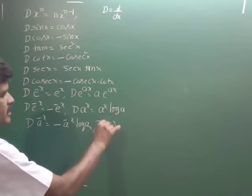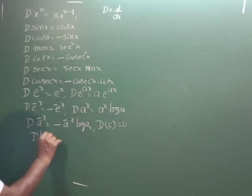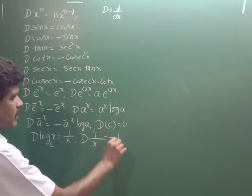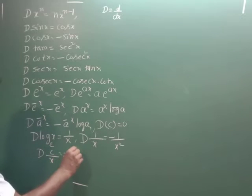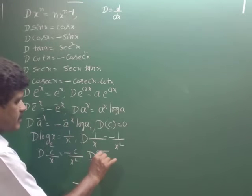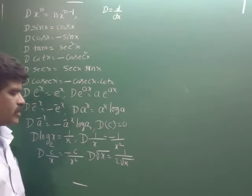Derivative of every constant is equal to zero. Derivative of log x (base e) is always equal to 1 by x. Derivative of 1 by x is always equal to minus 1 by x squared. Derivative of any constant over x is equal to minus constant by x squared. Derivative of root x is equal to 1 by 2 root x.